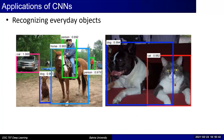A very common problem you can solve with CNN is: given an image, recognize what objects are present and what are the locations of those objects. Because in a single image you can have multiple objects, so we ask what are the objects and what are their locations within the image. This is something we'll see in detail later on.